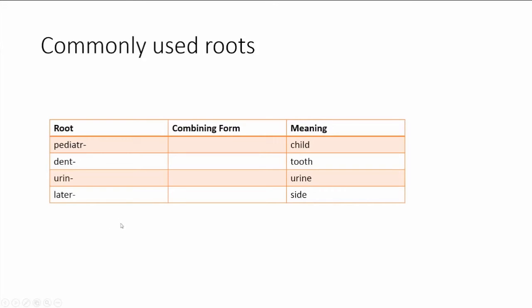Not all roots will have a combining form. For instance, we have pediatre. We have no combining form for this root word, so it will always be child of the root, pediatre. Same with dent, with urine, and ladder.